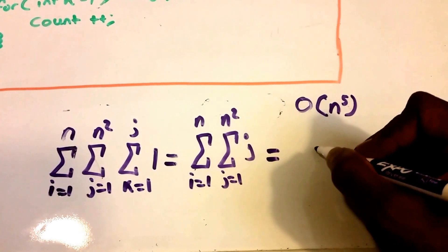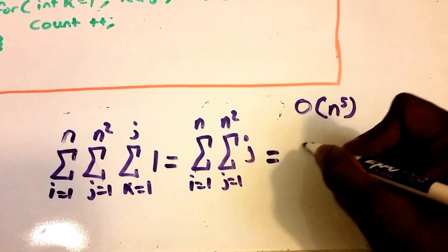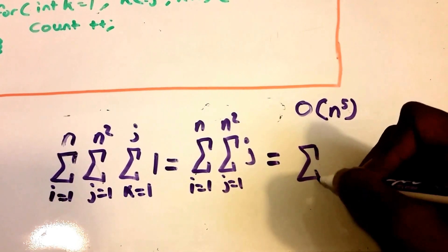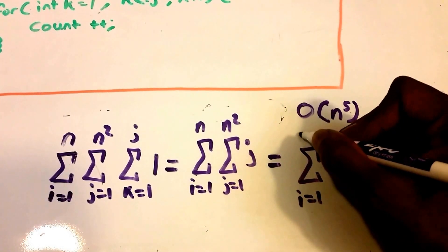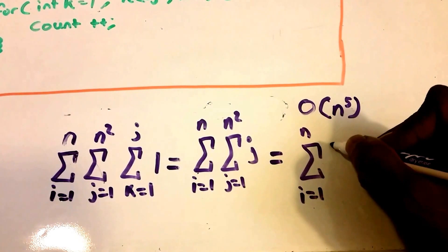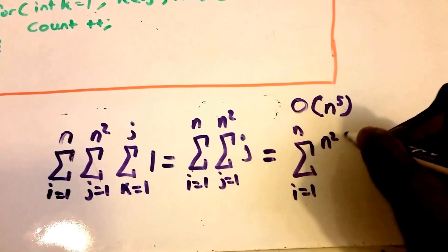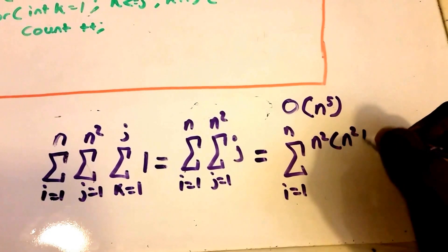Okay, and this of course is just equal to the summation from i equals one to n of n squared times n squared plus one divided by two.